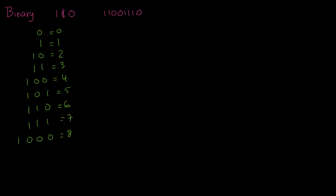If you draw yourself a little table, the first column starts on the right. Usually we go from left to right, but with binary we go right to left. So the first value is going to be worth 1, the second worth 2, the next worth 4, then 8, 16, 32 — and you just keep doubling every time you add on a new column.